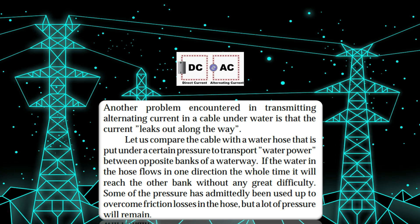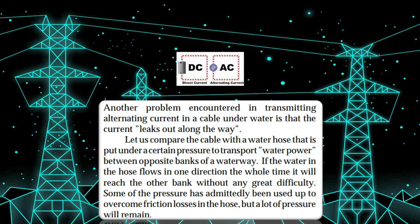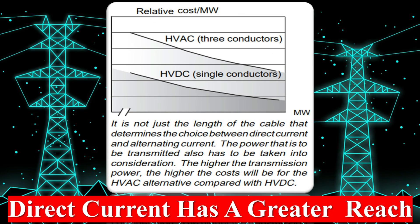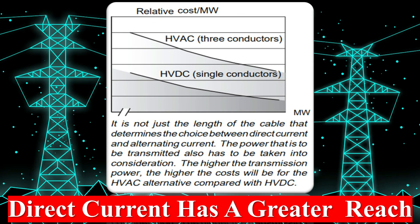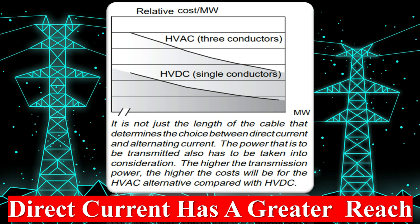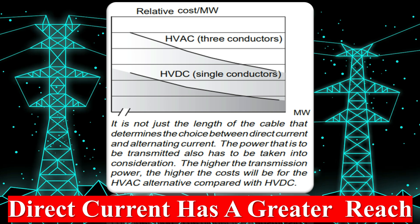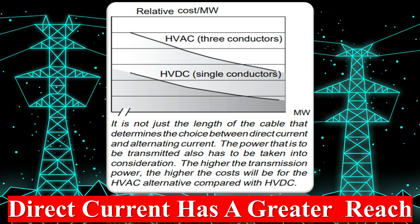Higher capacity rating: with the ability to operate at higher rated peak voltage compared to HVAC — which can only operate at approximately 71% of the rated voltage peak — HVDC has higher transmission capability. In general, HVDC has 40% higher transmission capability compared to HVAC lines due to this constraint.